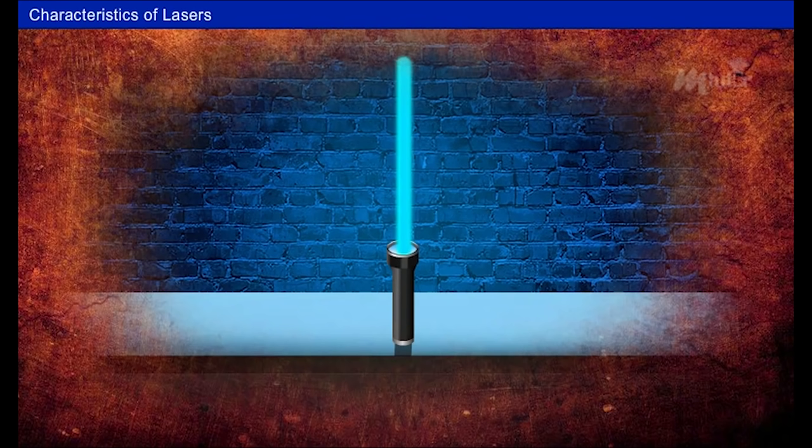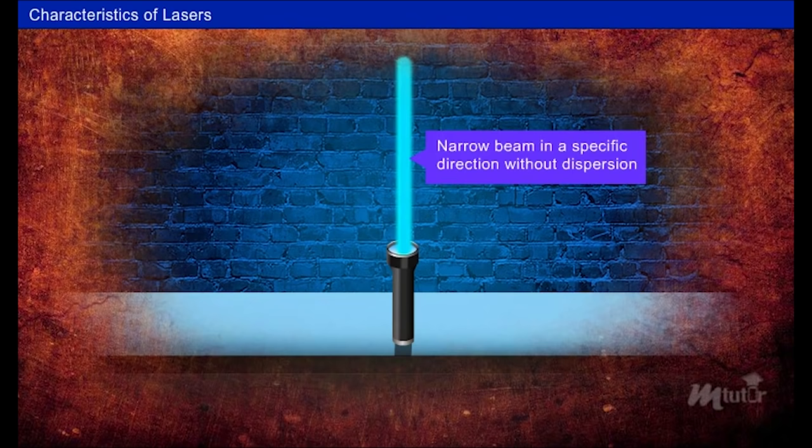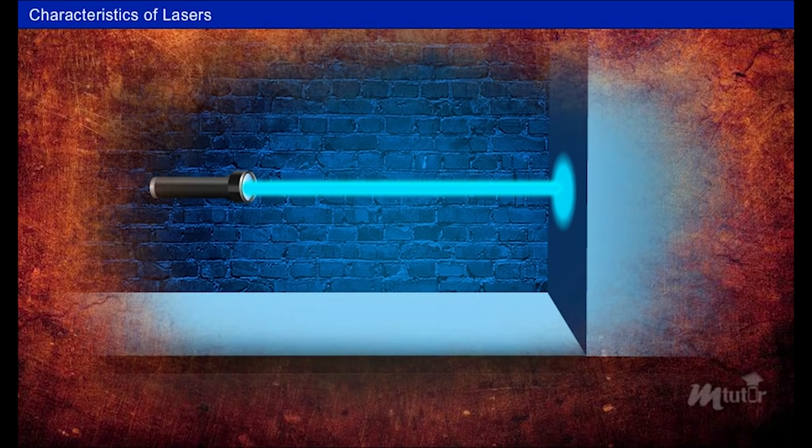Laser emits light that are highly directional, which means the light emitted by the laser are relatively a narrow beam in a specific direction without dispersion. Moreover, the laser beam spreads very little and thus can be focused sharply.